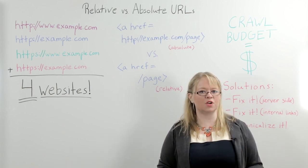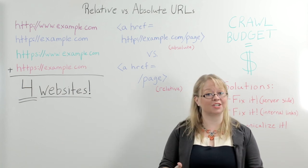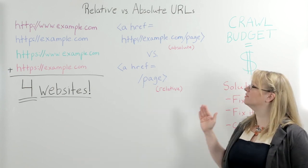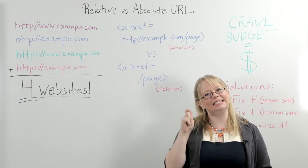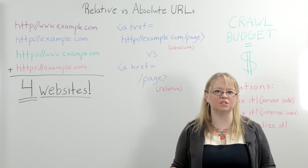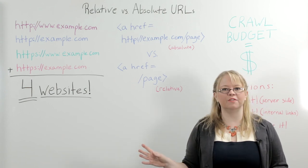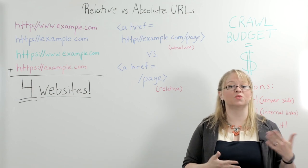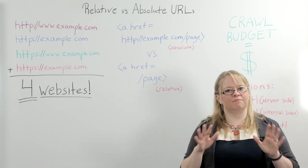Relative URLs will also cause your page to load slightly faster. However, in my experience, the SEO benefits of having absolute versus relative URLs far outweigh the tiny bit longer it will take the page to load. It's very negligible, and if you have a really long page load time, there's a whole boatload of other things you can change that will make a bigger difference. So page load time, in my opinion, is not a concern here.